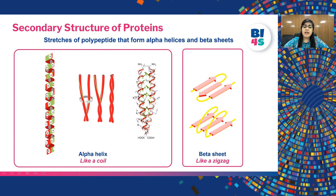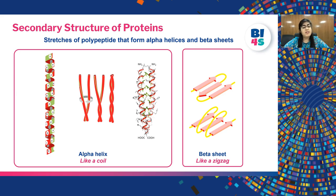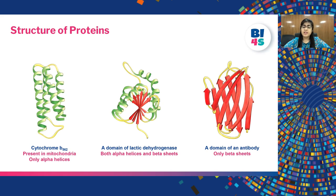Generally, alpha helices are present in proteins that fit inside the cell membrane. The beta sheet was discovered by studying silk protein. Beta sheets are present in the core of many proteins and can be formed by polypeptide chains making either parallel or anti-parallel segments, as shown by the arrows. It is basically a zigzag pattern that makes the protein very rigid.